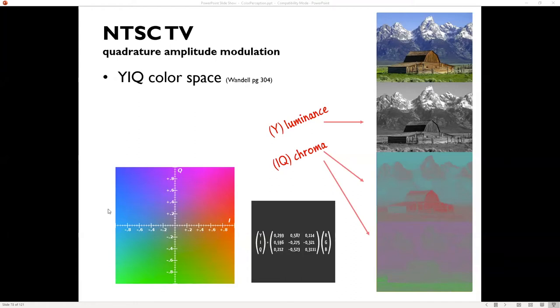So this was NTSC TV. This was broadcast TV. So we now have digital broadcast TV. This is when we had analog broadcast TV and it used in the radio frequencies, quadrature amplitude modulation. I don't even know if it's because I'm not a double EE.